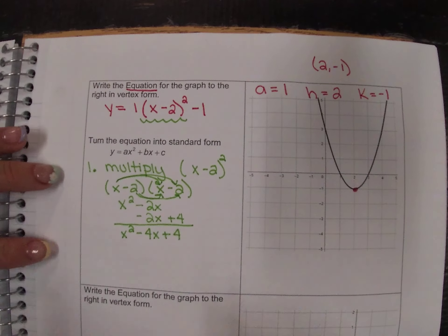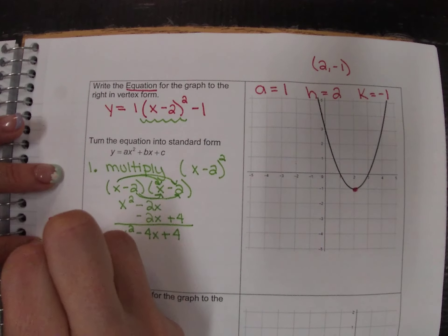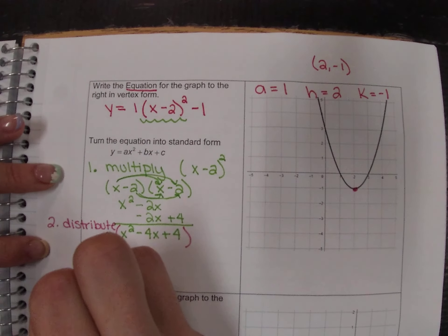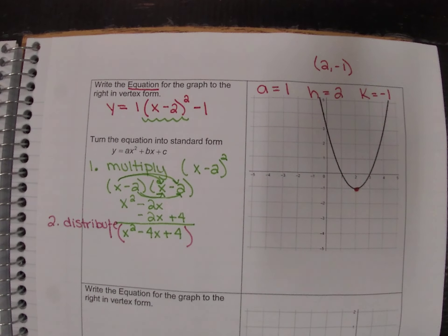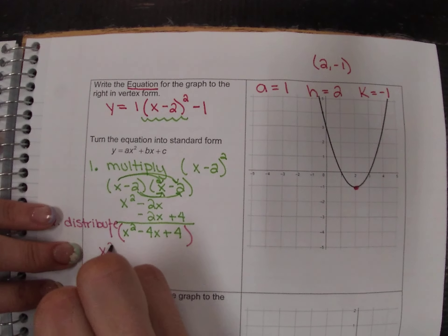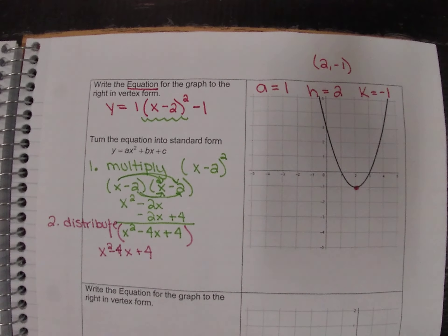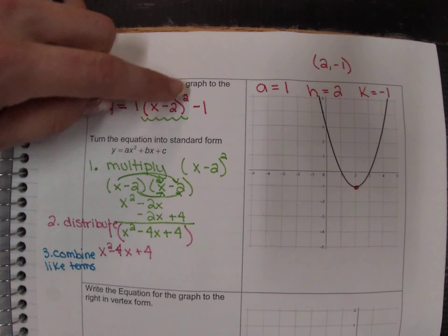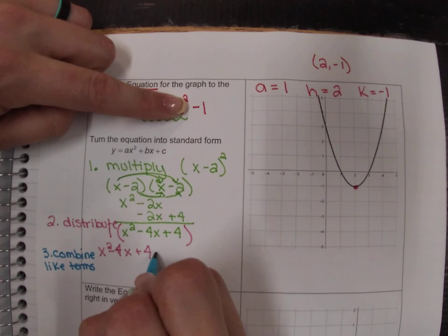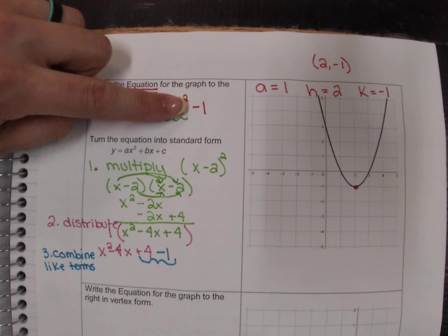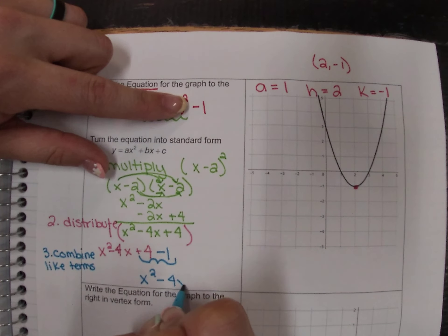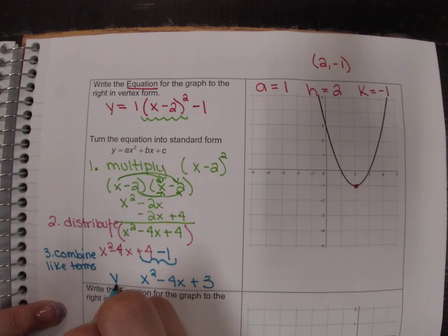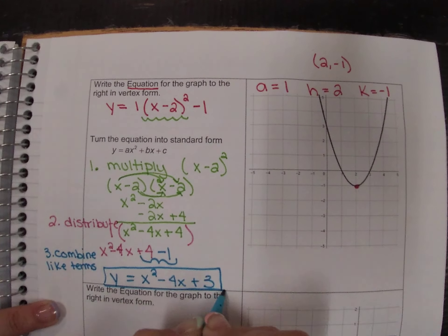Our second step is to distribute the number in front. We have all of this times a one in front, and when we distribute a one, we get the exact same thing: x squared minus four x plus four. Then our last step is to combine like terms. We subtract the one we have left on the end — four minus one gives us x squared minus four x plus three. Since this is an equation, it has to say y equals, so our final answer in standard form is y equals x squared minus four x plus three.